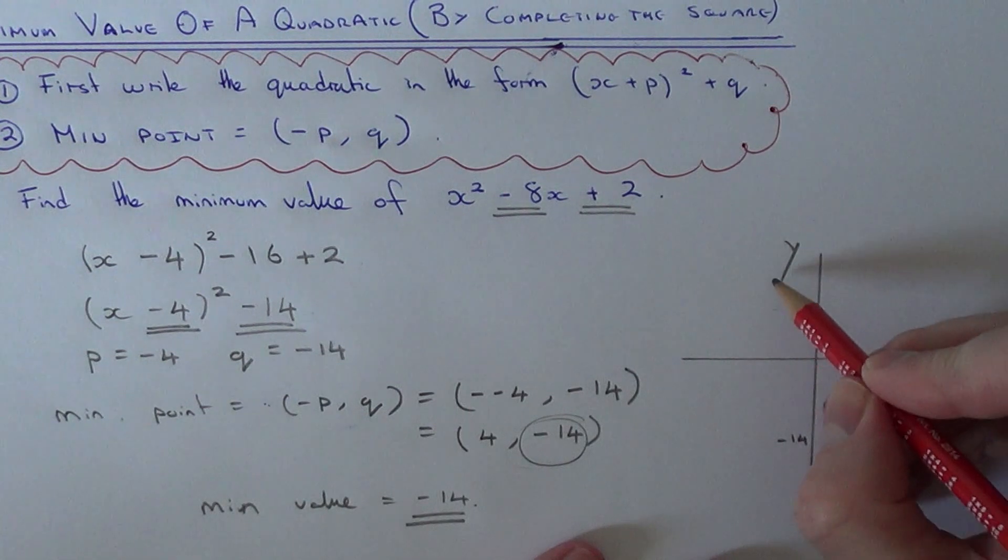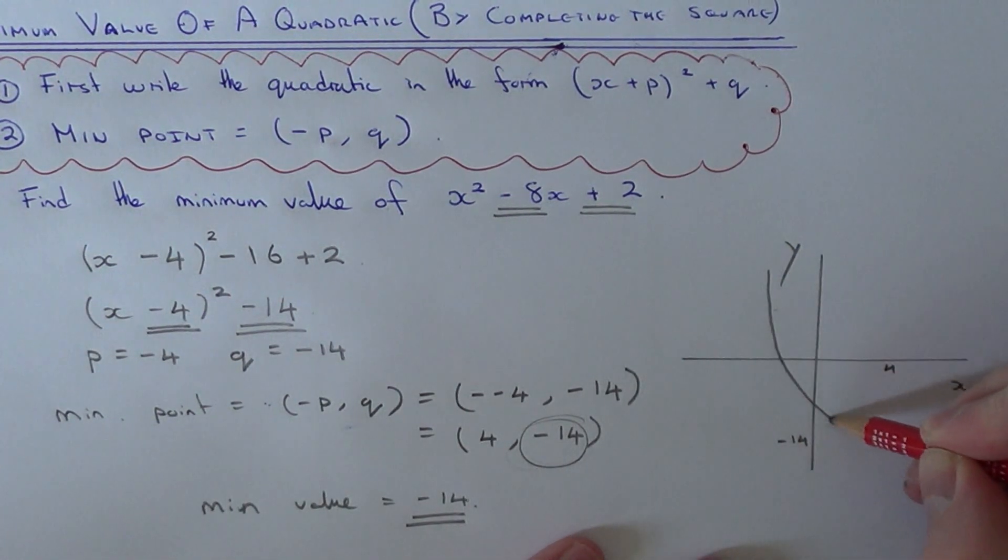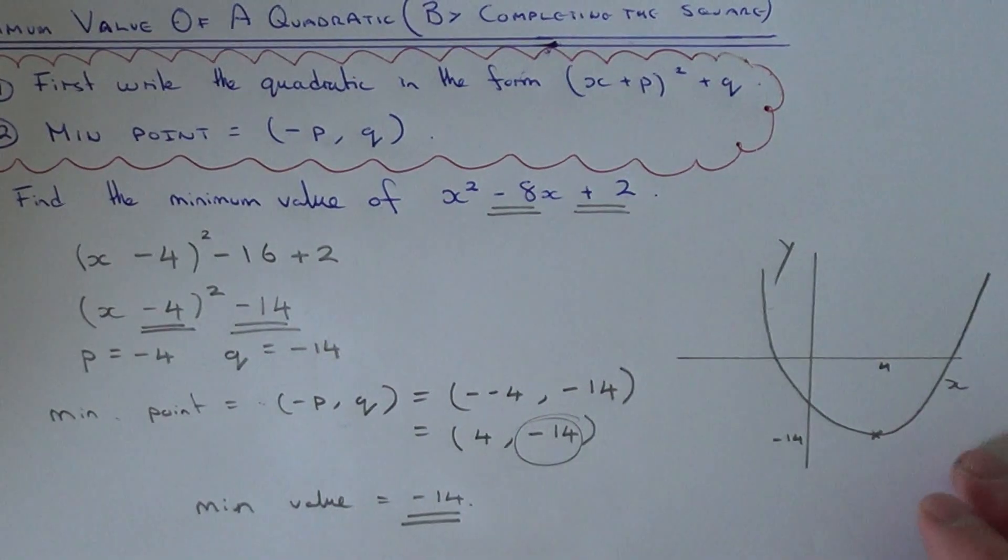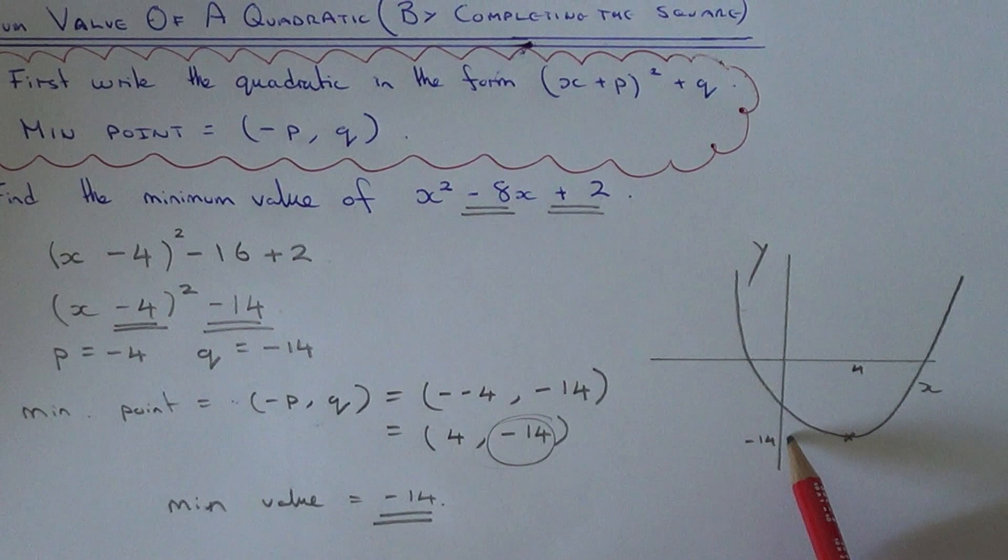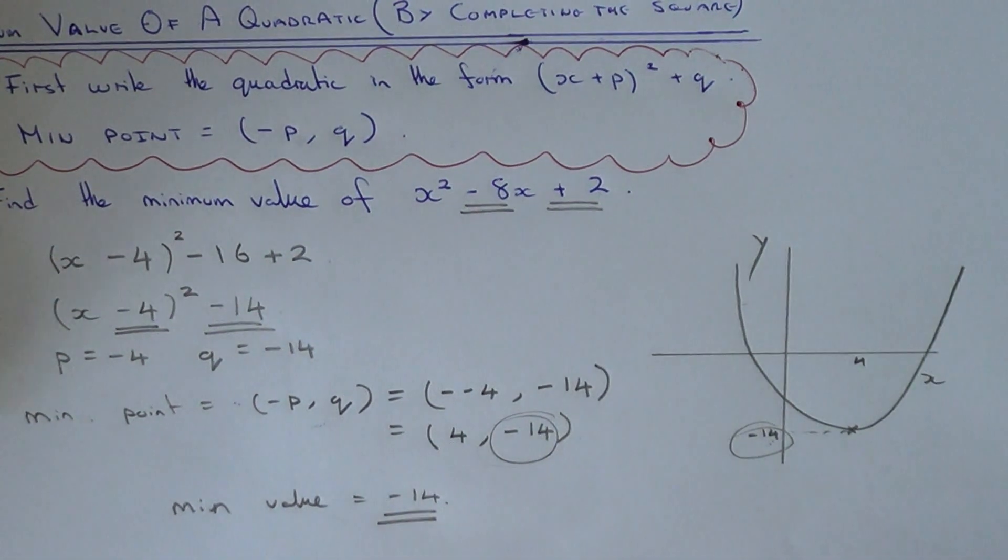And remember quadratic is a parabola. So that is the graph of this quadratic. So as you can see the minimum point is at minus 14. That's the lowest value on the graph.